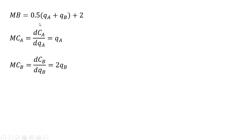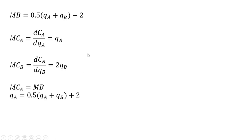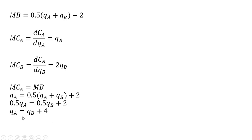Recapping our marginal benefit and marginal cost for each firm: the optimal level of pollution reduction will occur where the marginal cost for firm A equals the marginal benefit. Setting those two equations equal and dividing through by 0.5, we get the simplified equation.